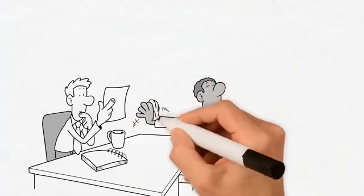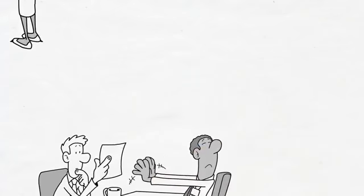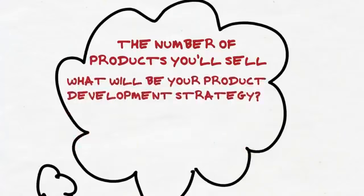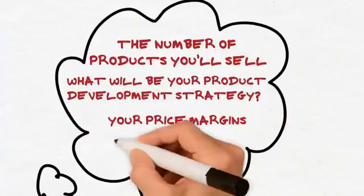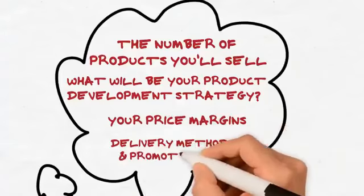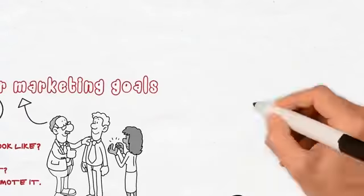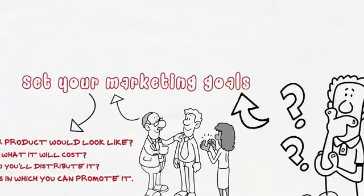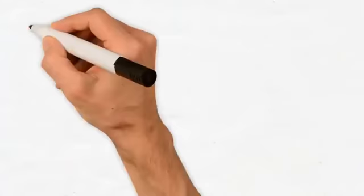You should set up measurable marketing goals that will help achieve your primary business objectives. Questions like the number of products you'll sell, what will be your product development strategy, your price margins, delivery methods, and promotion plan should be duly considered. When you ask yourself these questions, they will help define the goals for marketing your business.